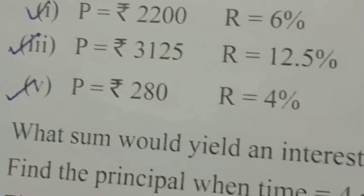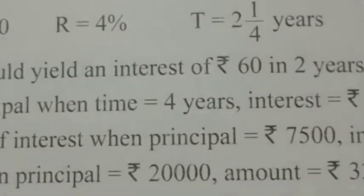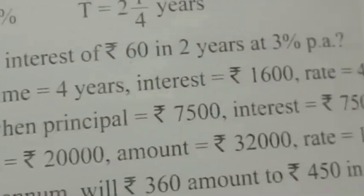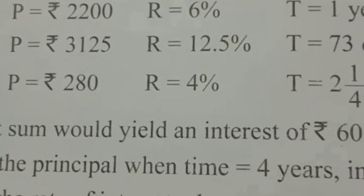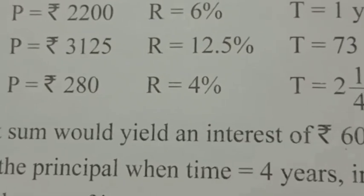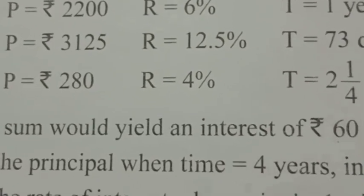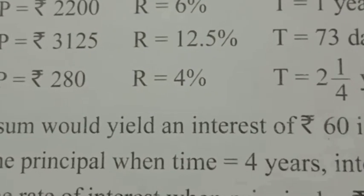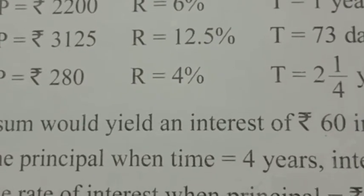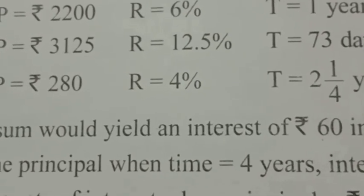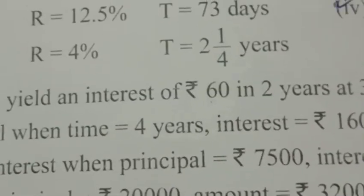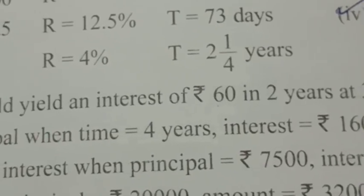Exercise 10, Question number 1. Find the Simple Interest and Amount in each of the following. First question: Principle equals Rs.2200, Rate equals 6%, Time equals 1 year.